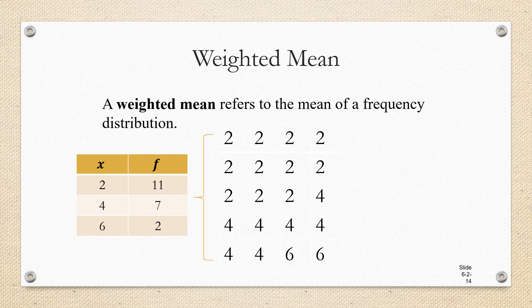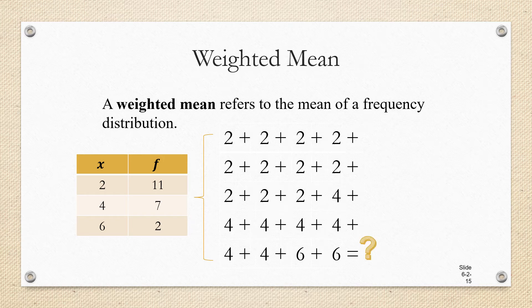here we have 11 twos, we have 7 fours, and we have 2 sixes. And we could just add all those up and ask ourselves, what do we get? But it takes a little while to add up all those numbers. And remember, this is a relatively small list of data. Usually we'll be dealing with larger lists of data. But let's think about this.